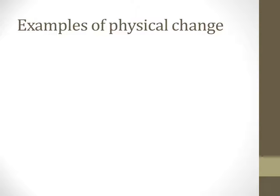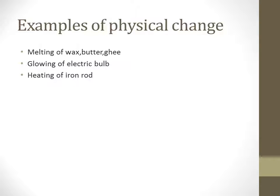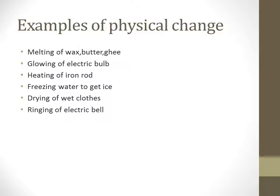There are different physical changes taking place in our everyday life. Examples include: melting of wax, butter, and ghee; glowing of an electric bulb; heating of an iron rod; freezing water to get ice; drying of wet clothes; ringing of an electric bell; chopping of wood; and changing water into steam by heating. These are all physical changes taking place in our everyday life.